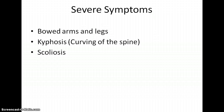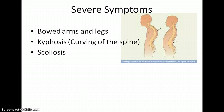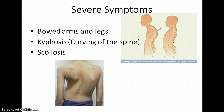Severe symptoms include kyphosis, scoliosis, and bowed arms and legs. You've probably heard of kyphosis and scoliosis, where people have a bent back. This is again due to the improper structure formation. This is a good sign that somebody might have OI, but other people without OI might also have these conditions.